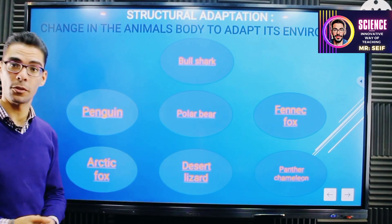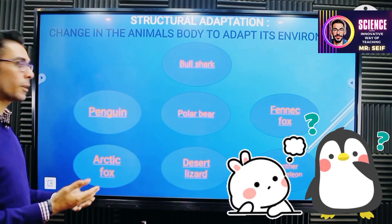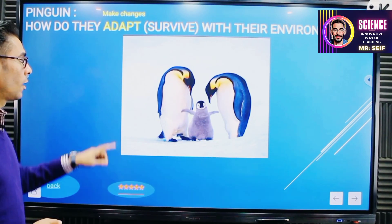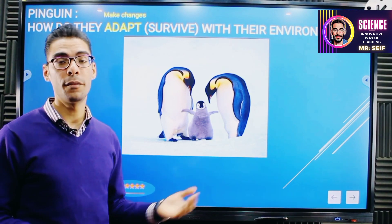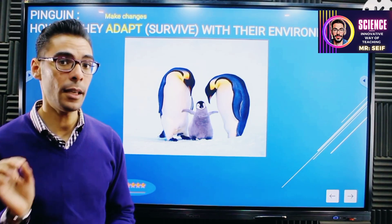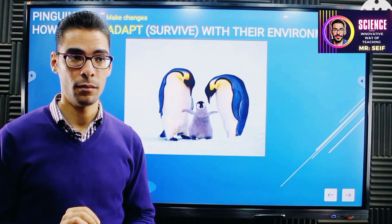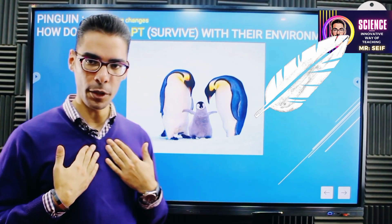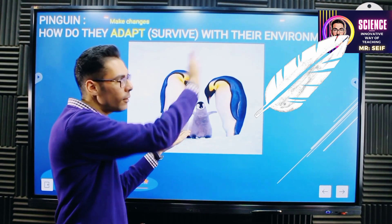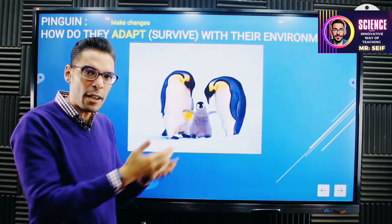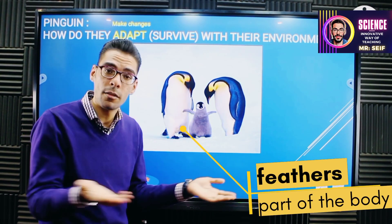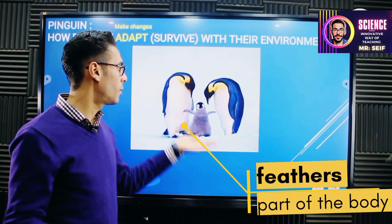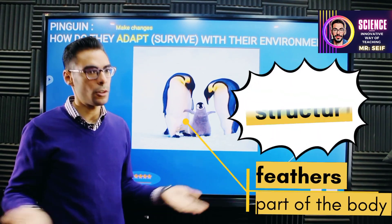Let's start with the first animal we visited, which is the penguin. They have white feathers, or thick downy feathers. Feathers — is this part of their body, part of the environment, or an action they are doing? The answer is simple: it's a part of the body. So the feathers here represent structural adaptation.